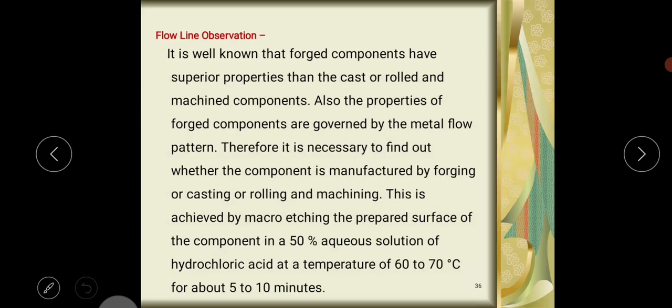Next, flow line observation. It is well known that forged components have superior properties than cast or rolled and machined components. Also, the properties of forged components are governed by the metal flow patterns, means how the metal flows into the specific shape. Therefore, it is necessary to find out whether the component is manufactured by forging or casting or rolling and machining.